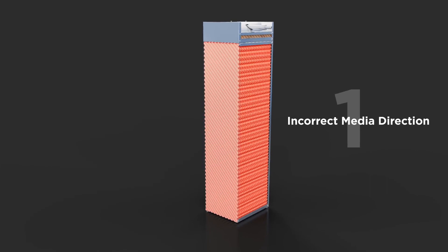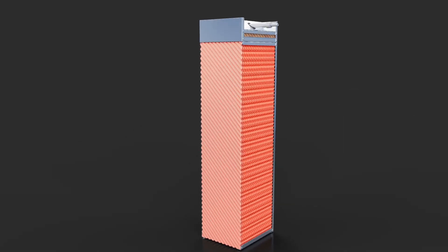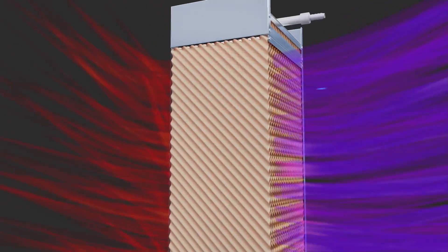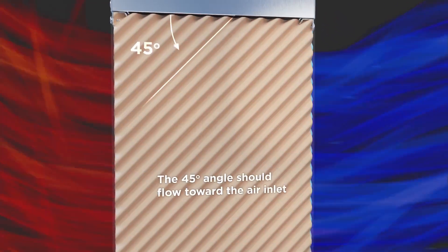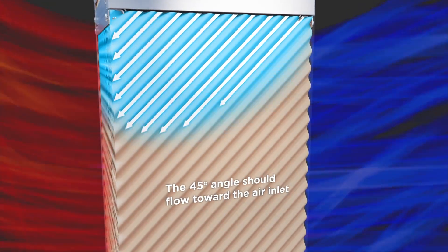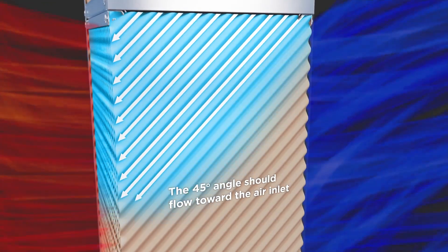Wrong direction. If the media is installed incorrectly, water runs towards the air outlet, resulting in inadequate cooling and excessive entrainment. To fix this, flip the media so that the water flows toward the air inlet.